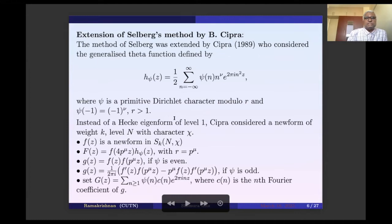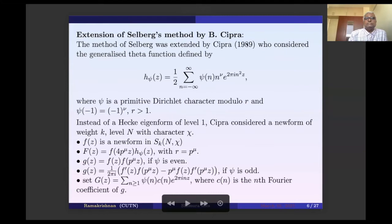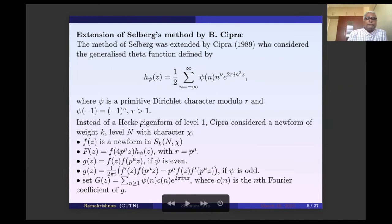The extension of Selberg's method by Cipra appears in the Journal of Number Theory, 1989. Cipra considered the generalized theta function defined by (1/2) * sum psi(n) * n^nu * e^(2*pi*i*n^2*z), where psi is a primitive Dirichlet character modulo r, r is any positive integer, and psi(-1) = (-1)^nu. When psi is an even character, nu=0; when psi is odd, nu=1.